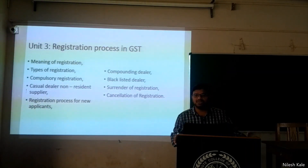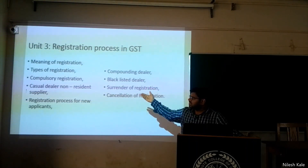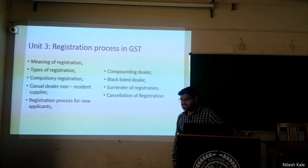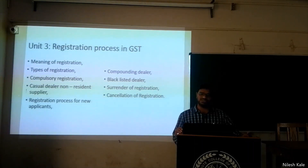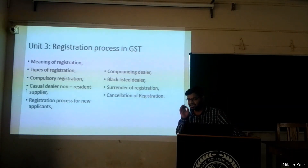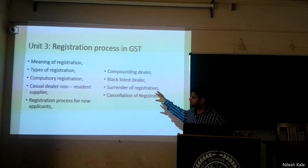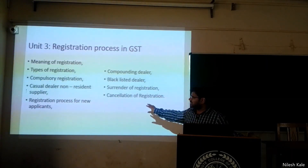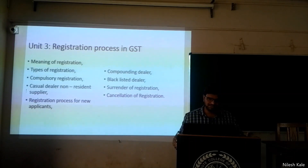The most important chapter is registration under GST, which is Unit 4. Here we are going to learn the meaning and types of registration, then compulsory registration under Section 24 of the GST Act, Section 27 on casual dealers and non-resident suppliers, and the registration process for new applicants — what is the procedure, what are the time limits. We will also cover compounding dealers, blacklisted dealers, surrender of registration, and cancellation of registration. This chapter is based on Sections 22 to 30 of the CGST Act and relevant rules.